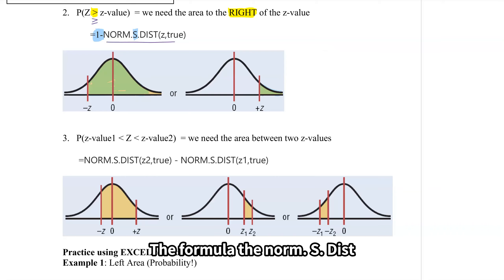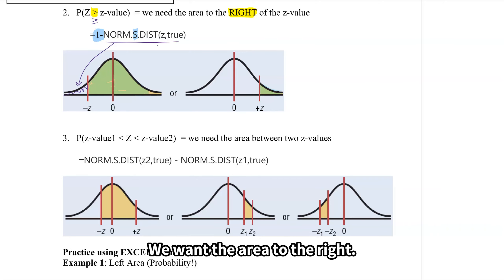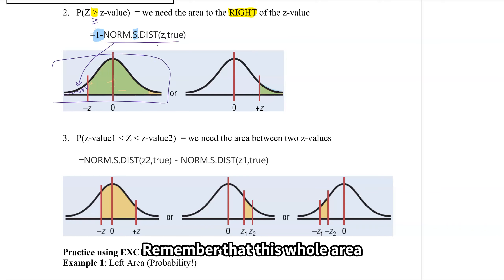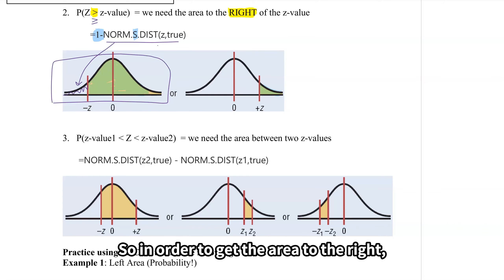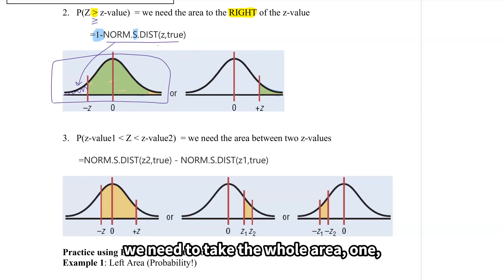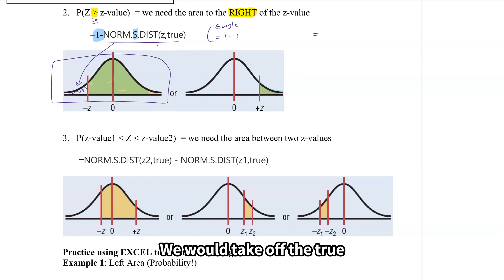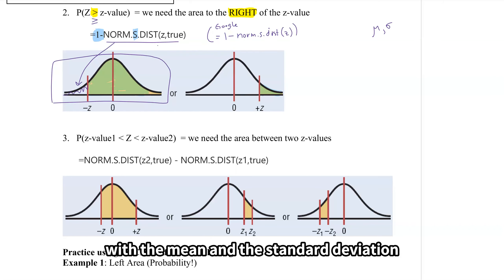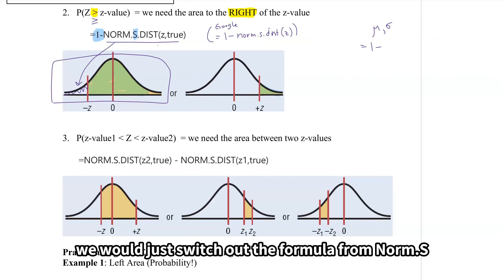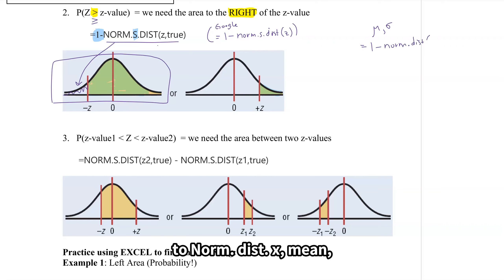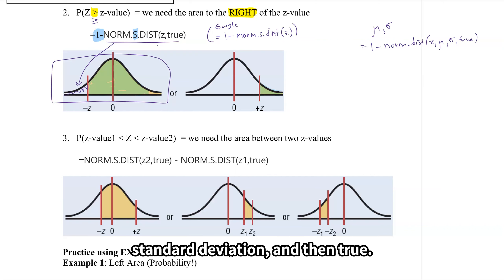To find the area to the right, we're going to subtract from one. The norm.s.dist formula gives us the area to the left, but we don't want that area — we remember that the whole area under the curve adds to one. So to get the area to the right, we take one and subtract off the area to the left. In Google, we would leave out the 'true'. For any normal distribution with a mean and standard deviation, we switch the formula to norm.dist with x, mean, standard deviation, and true.